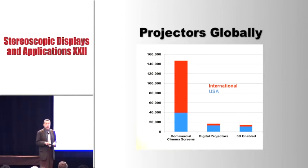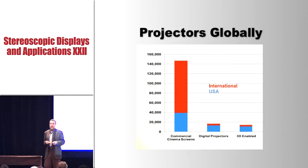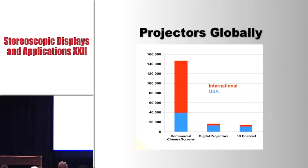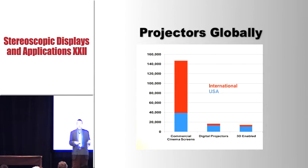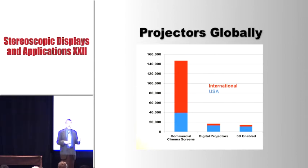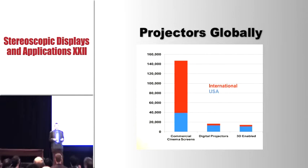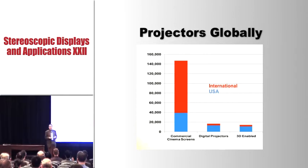Most of the cinema screens are outside of the United States or North America. There are something like 37,000 theater screens in the United States. You can see digital projectors and 3D-enabled projectors. There is a need, especially for cinema operators and theater owners who can't afford a digital projector and the cost associated with stereoscopic capability, because it can cost $150,000 over just a few years.